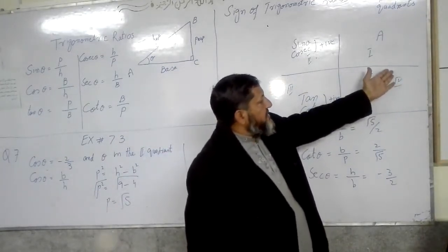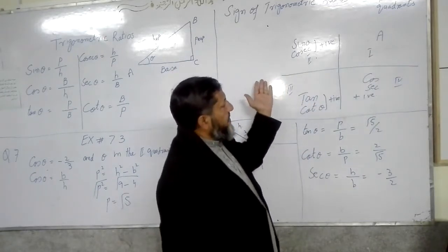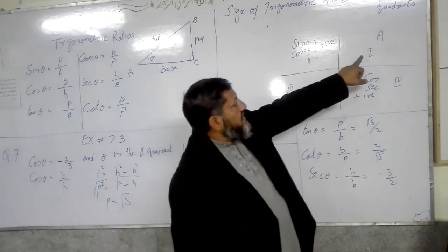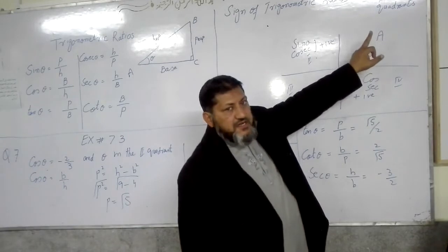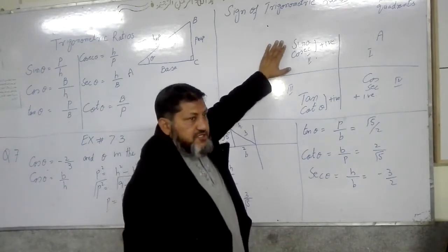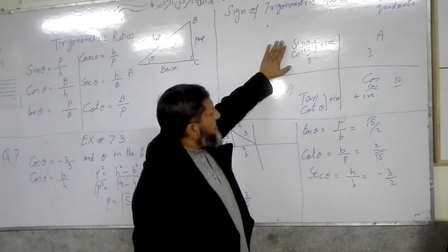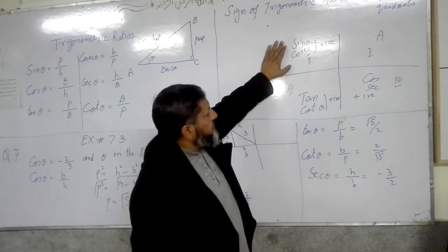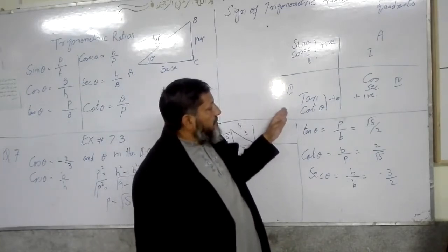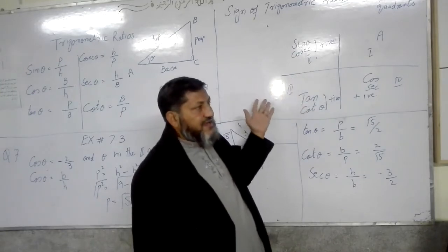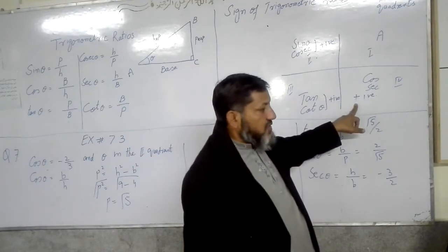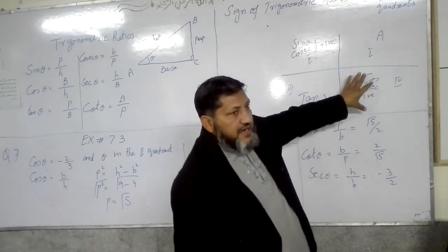In the first quadrant, the x-axis value is positive. In the second quadrant, x-axis is negative and y-axis is positive. In the fourth quadrant, y-axis is negative. In the first quadrant, all trigonometric functions are positive. In the second quadrant, sine and cosecant are positive and the remaining are negative. In the third quadrant, tangent and cotangent are positive and the remaining are negative. In the fourth quadrant, cosine and secant are positive and the remaining are negative.